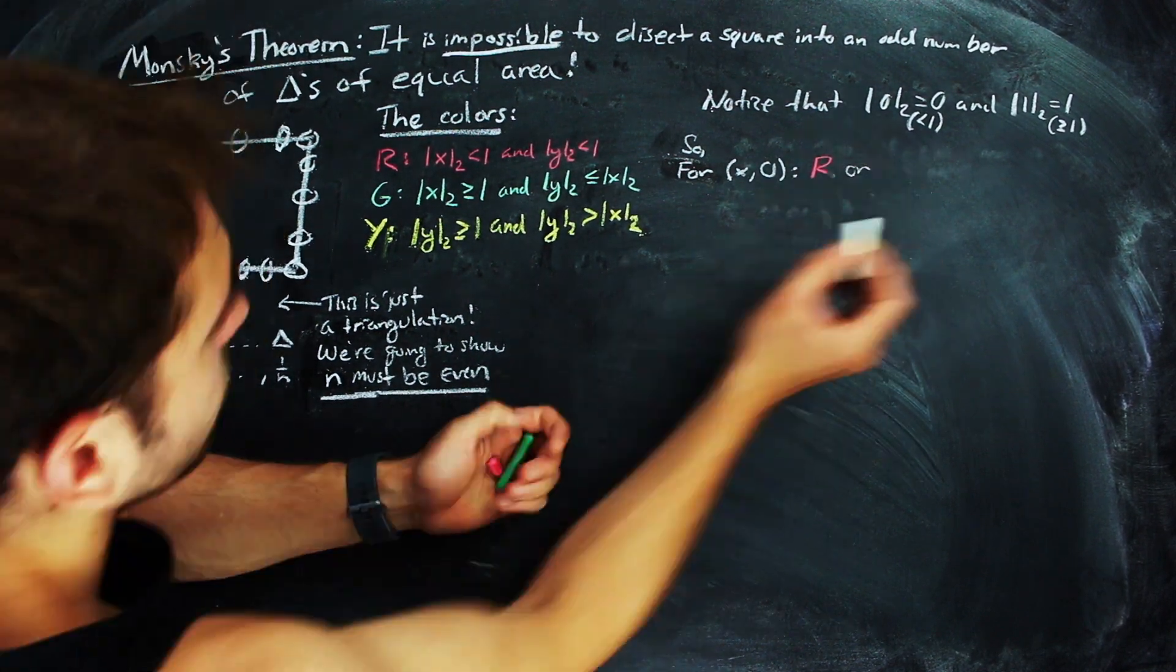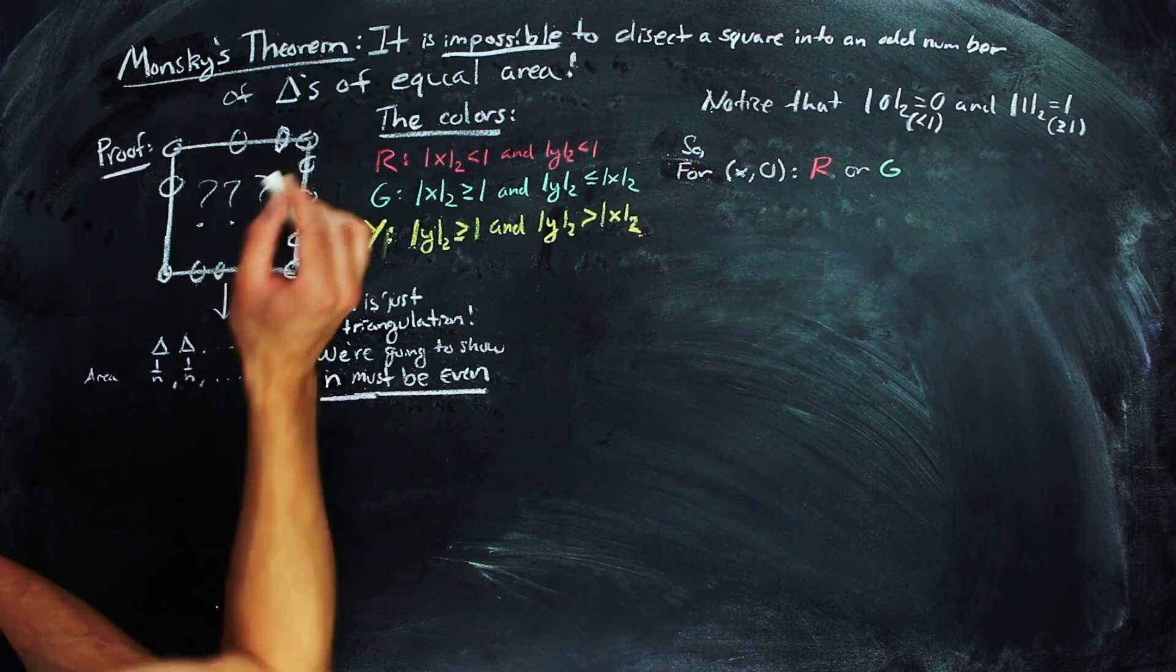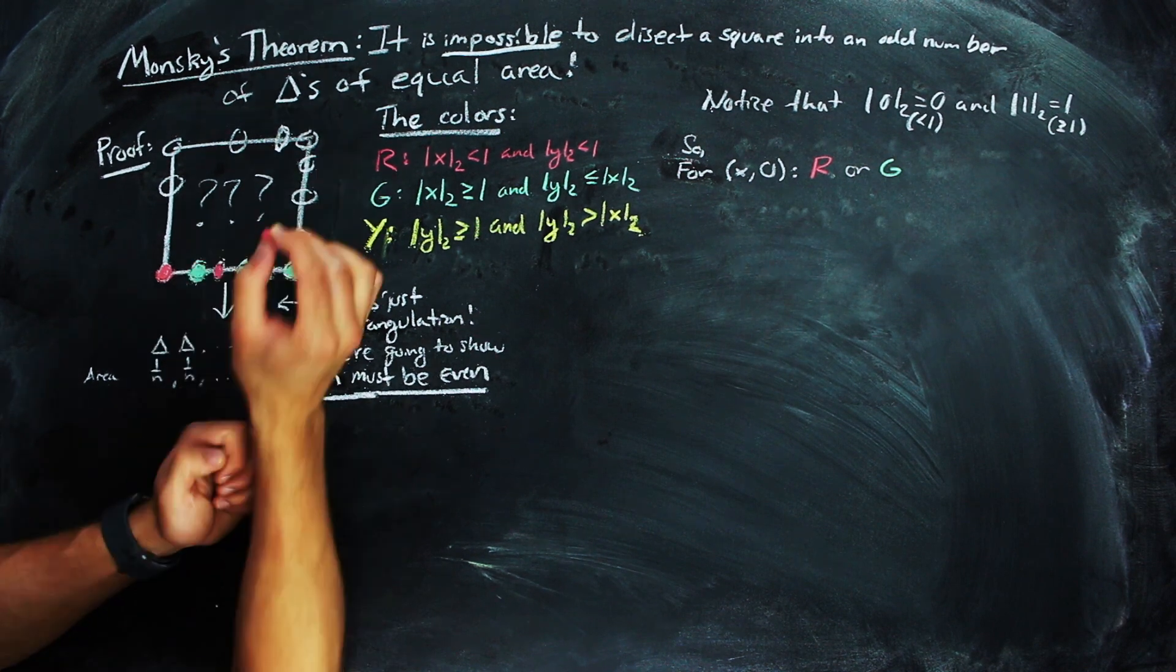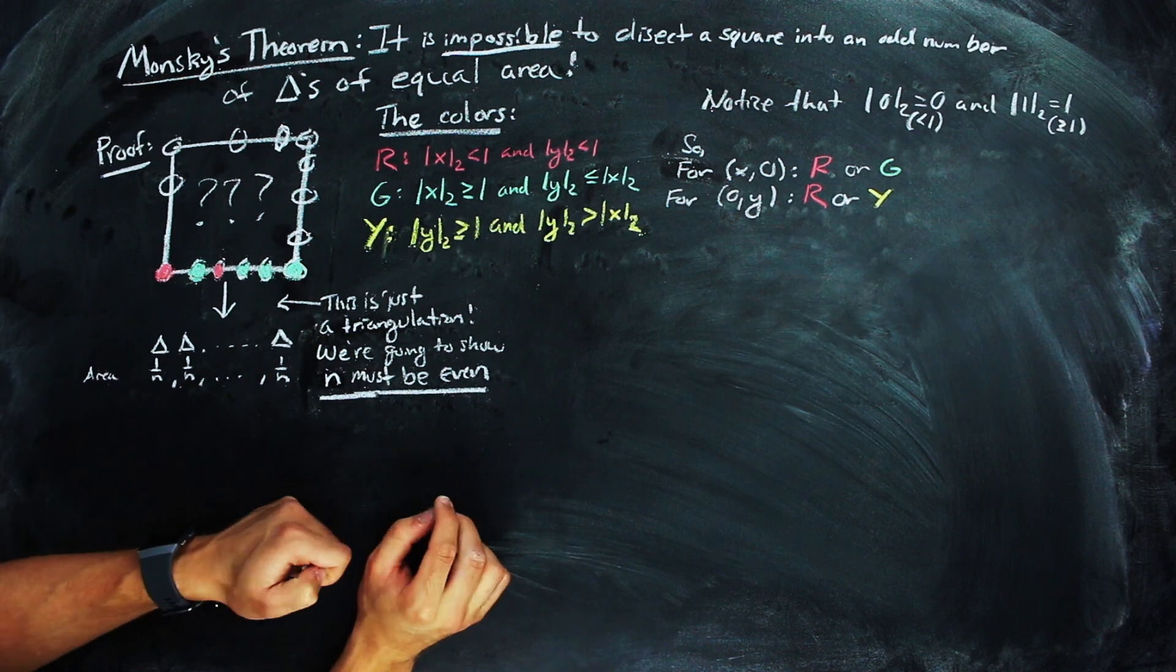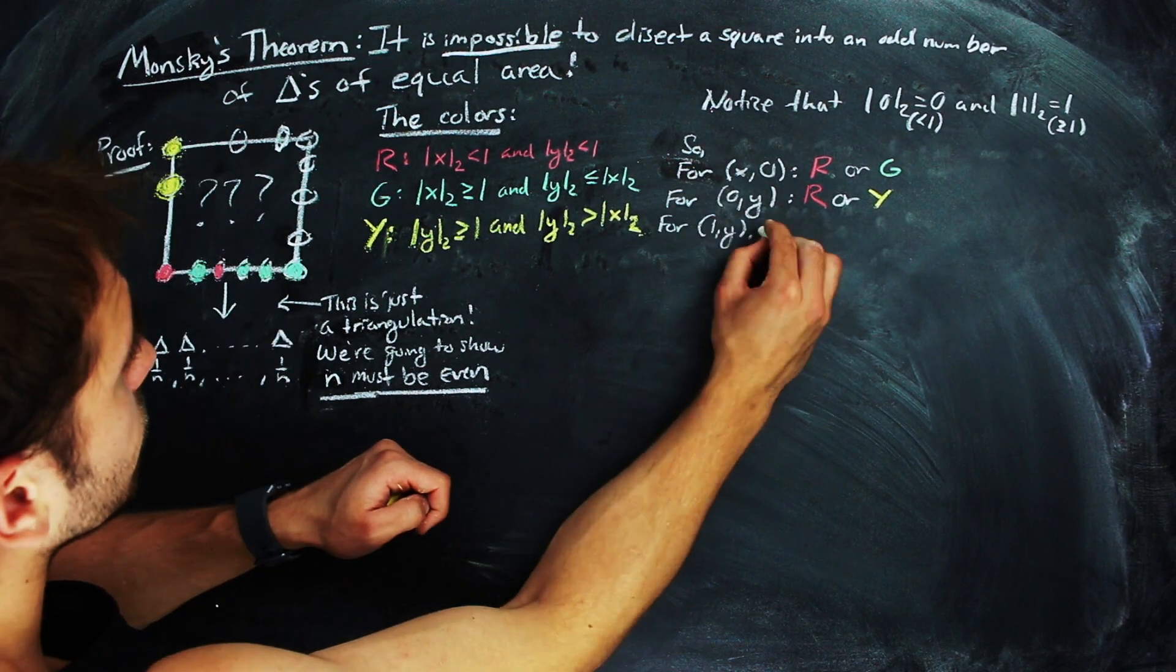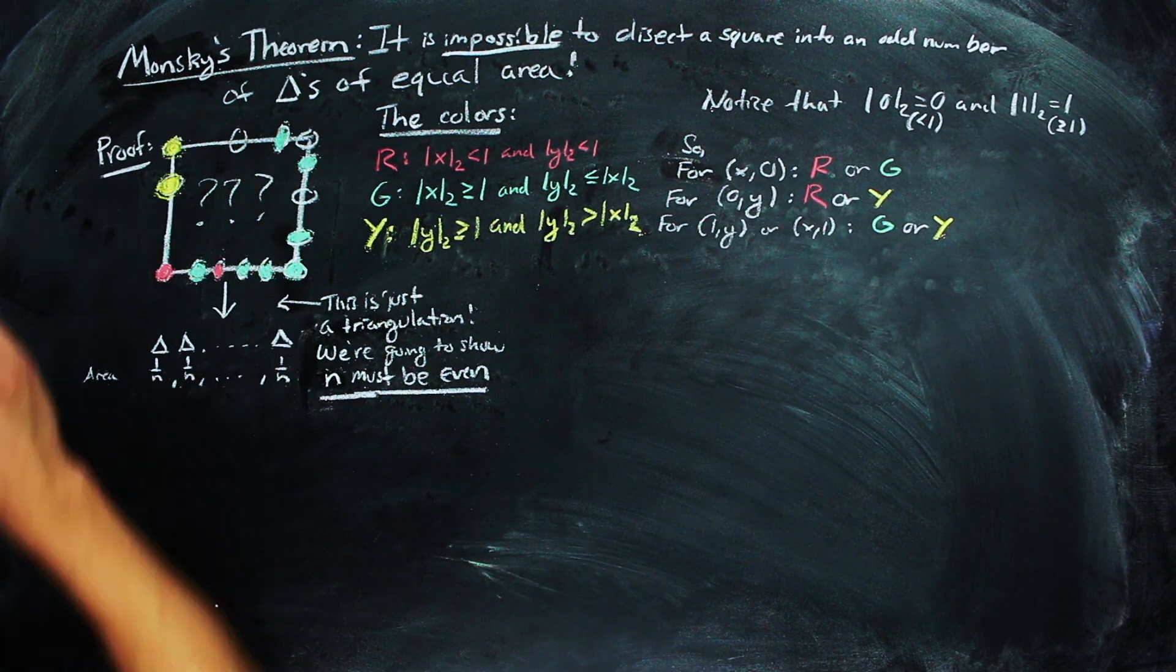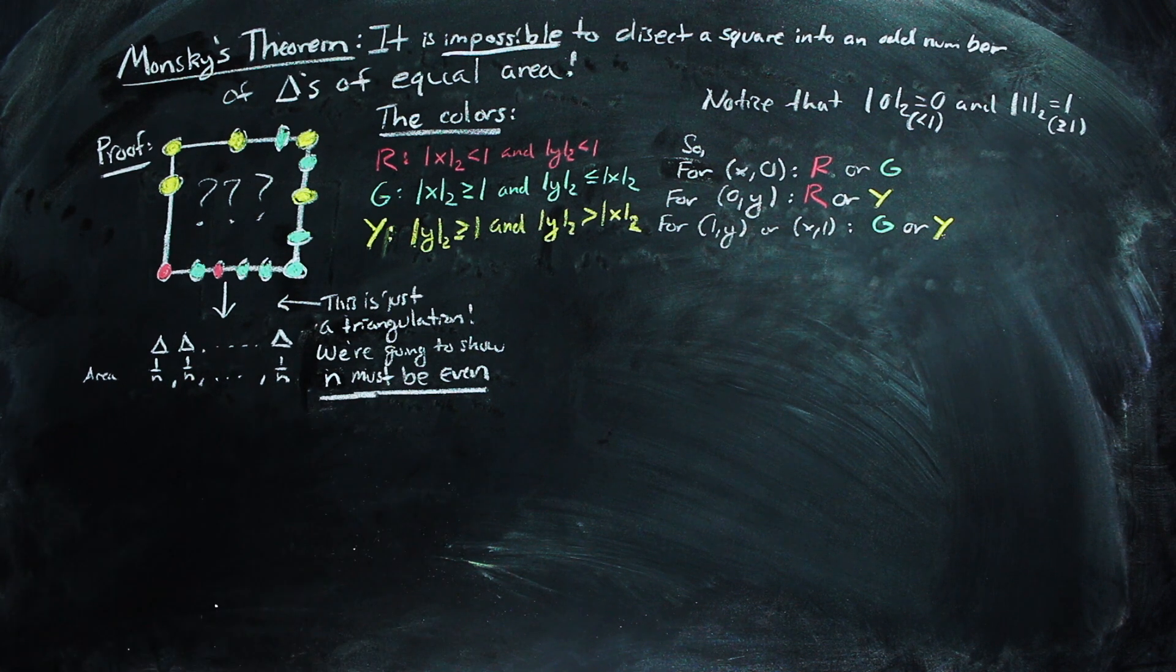Notice as well that the only colors that can occur on the segment from (0,0) to (1,0) are red and green, since the two-adic norm of the y-coordinate is always 0. We can make a similar statement about the other sides. So only the colors red and yellow can occur on the segment from (0,0) to (0,1), and only yellow and green can occur on the segments from (1,0) to (1,1), and (0,1) to (1,1). So our diagram might look like this on the perimeter.